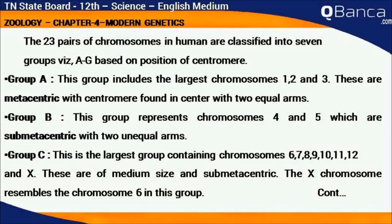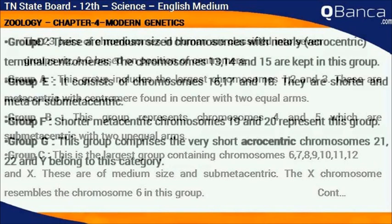Group C is the largest group, containing chromosomes 6, 7, 8, 9, 10, 11, 12 and X. These are of medium size and sub-metacentric. The X chromosome resembles chromosome 6 in this group.